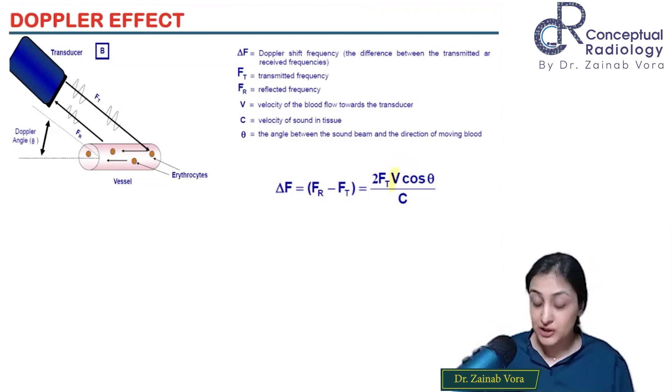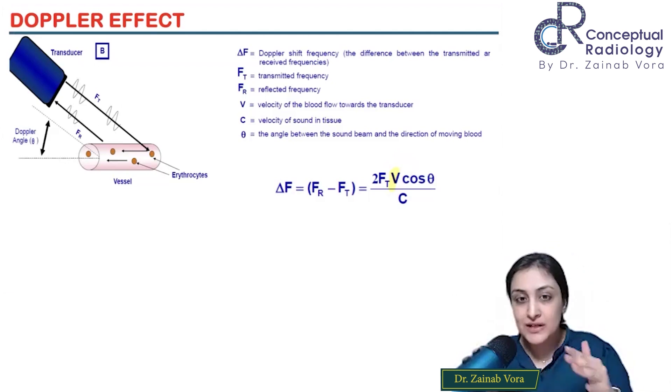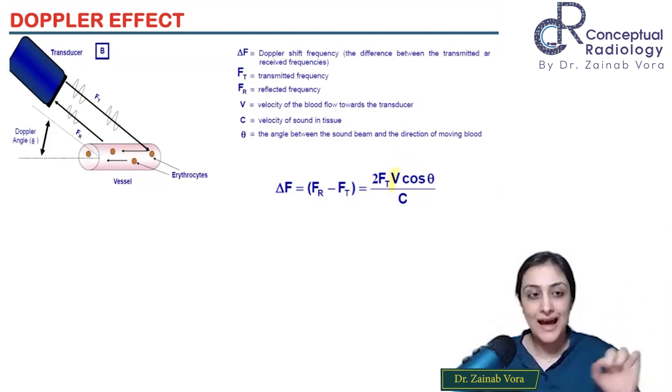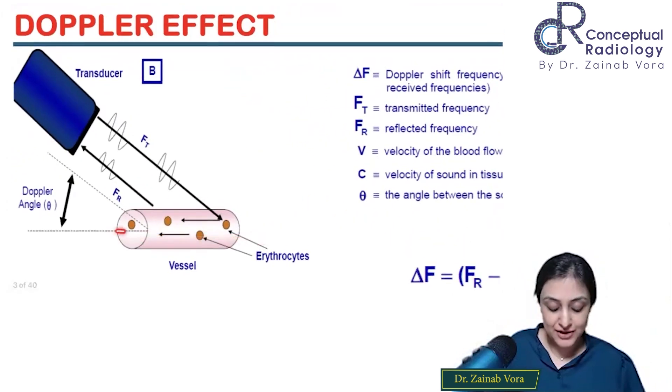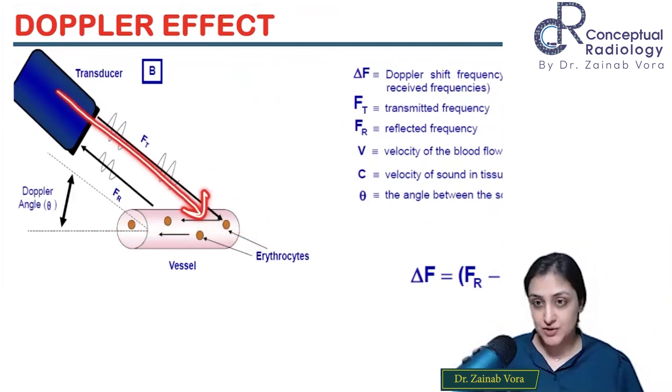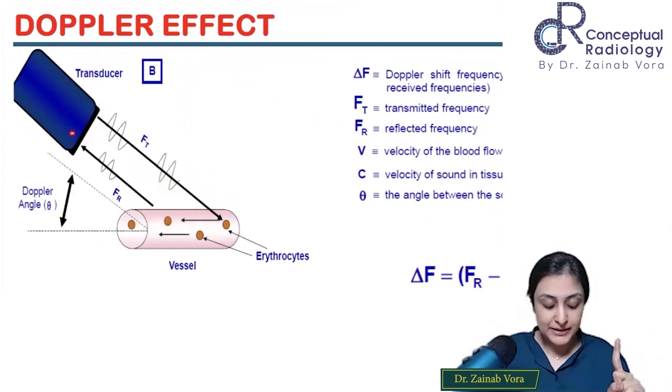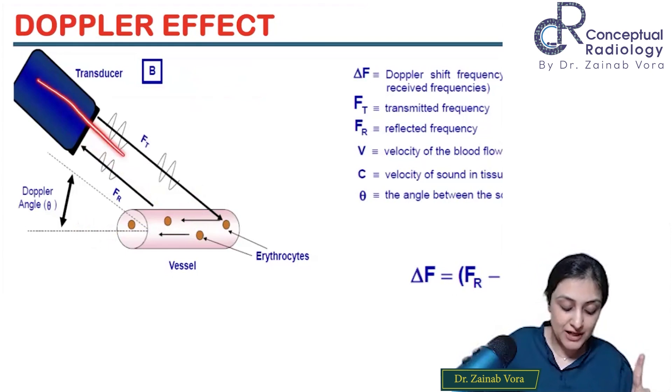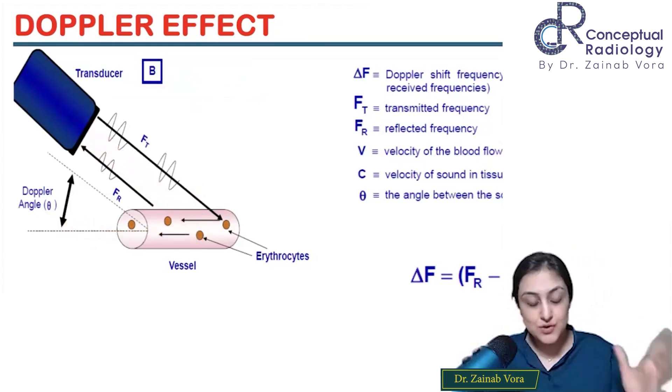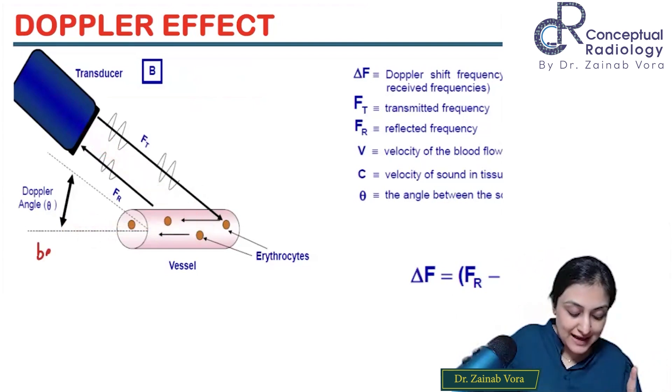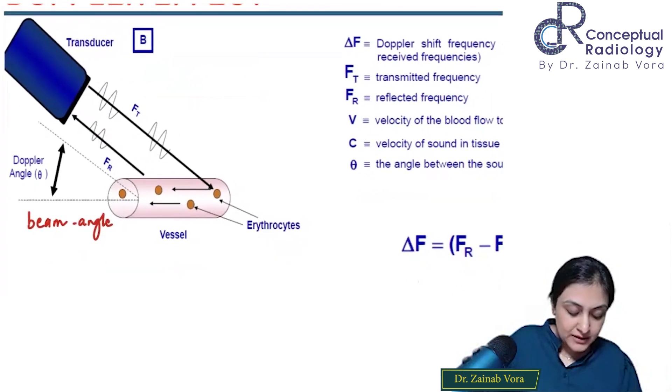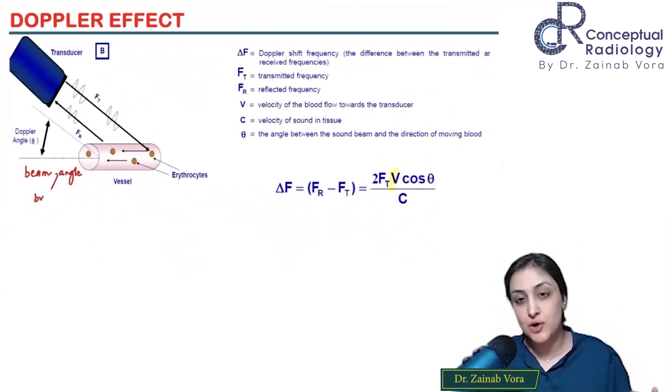Cos theta - what is theta? Very important. First, what is c? C is the velocity of sound in tissue, which is also constant. We know everything except V, and this is how we find velocity. Now let's talk about Doppler angle. This is the blood vessel, this is the direction of blood flow, and this is my transducer direction. Always remember, Doppler angle is not between the skin and vessel, it's the angle between the transducer beam and the blood vessel. This is a common mistake. It's the transducer and the blood vessel. This is what you need to remember - the angle between the beam and the blood vessel long axis.